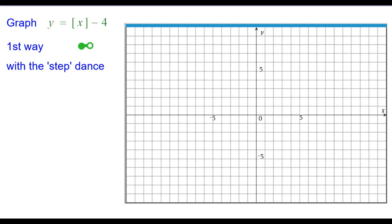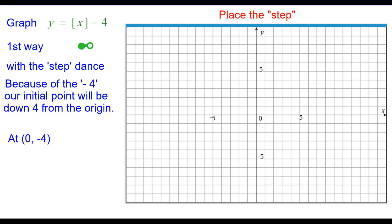The first way we're going to use is what we call the step dance. Because of the minus 4, our initial point will be down 4 from the origin at (0, negative 4).